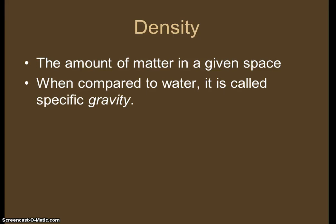Then we have density. The definition is the amount of matter in a given space. When compared to water you'll hear it called specific gravity. The more matter you have in an area of space, the heavier it is. You measure the mass and the volume of the mineral, divide them out, and you get a density number — the specific gravity of that mineral. That's one of the best ways to figure out which mineral you've got because it really helps narrow down the choices.